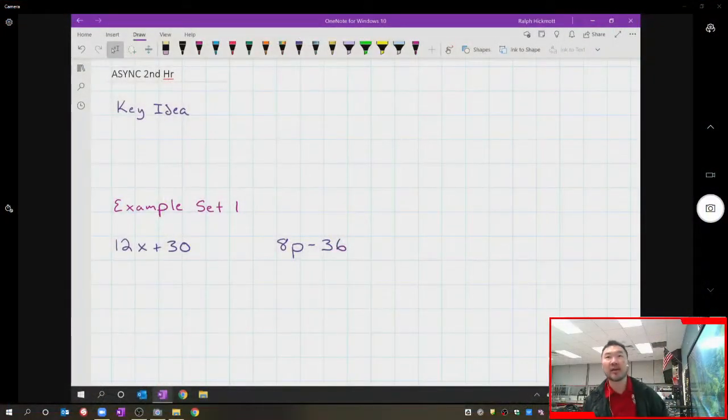What you should be doing is taking out your foldable, going to the 3.2 extension section and adding these examples and key ideas. Tomorrow when we go over the live lesson, we'll review these examples and make sure we're comfortable with this unit.